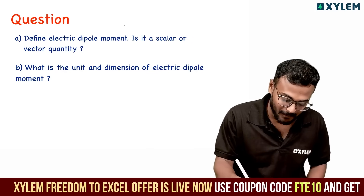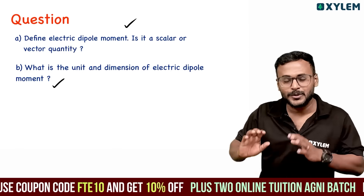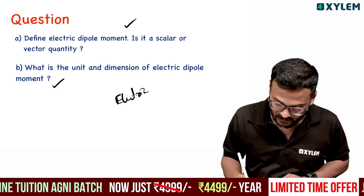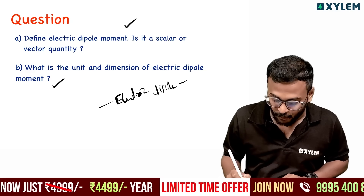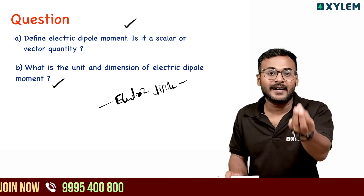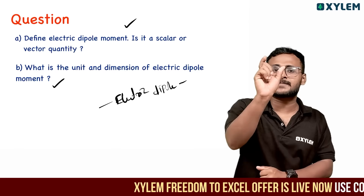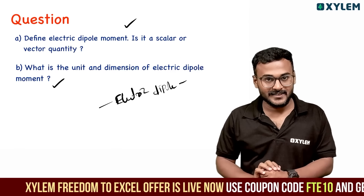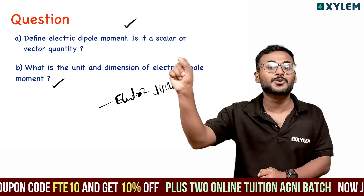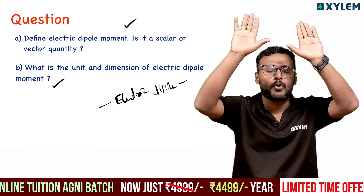What is the electric dipole moment? Is it a scalar or a vector? What is the equation, the unit, or the dimension? Two equal and opposite charges separated by a small distance — name the arrangement. That's the electric dipole moment. What is the moment of this arrangement? In that direction, one electric dipole is the key concept.